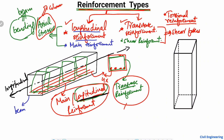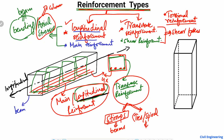One important thing: the transverse reinforcement has two names. When they are used in beams, we call them stirrups. When the transverse reinforcement is used in columns, they are known as ties or spiral reinforcement — their technical names are spiral or ties reinforcement.